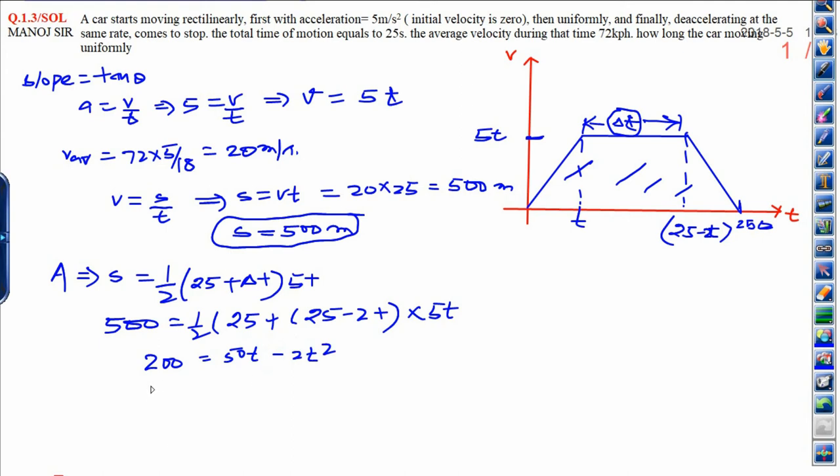This is a quadratic equation which can be solved by factorization: t squared minus 25t plus 100 equals zero. From here we will get two values of time, one is 20 seconds and another one is 5 seconds.